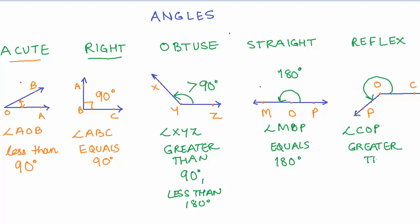To review: an acute angle measures less than 90 degrees; if the angle equals 90 degrees, it is a right angle; if it measures more than 90 degrees but less than 180 degrees, it is an obtuse angle; a straight angle equals 180 degrees; and a reflex angle is greater than 180 degrees.